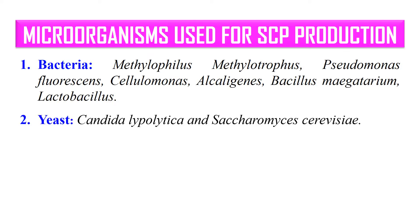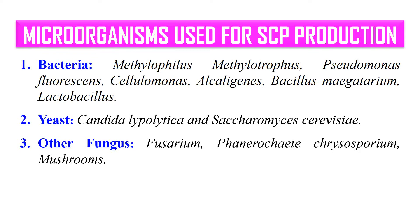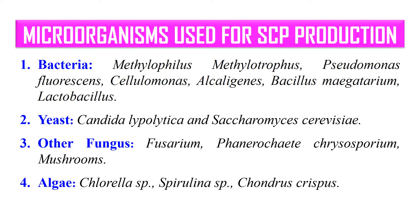In the case of yeast, Candida lipolytica and Saccharomyces cerevisiae are used. In the case of other fungi, Fusarium, Phanerochaete chrysosporium, and mushrooms are used for SCP production. And algae like Chlorella species, Spirulina species, and Chondrus crispus are generally used for the production of single cell proteins.